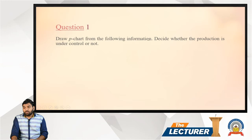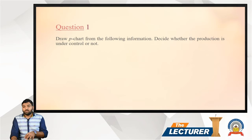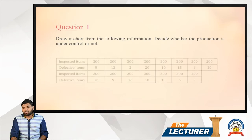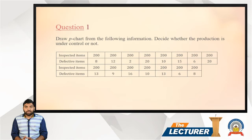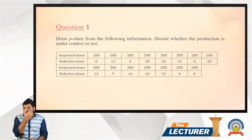Draw a p-chart from the following information and decide whether the production is under control or not. Item inspected is 200. The defective items are: 8, 12, 2, 20, 10, 15, 6, 20, 13, 9, 16, 10, 13, 6, and 8. So there are some defective items — let's start.